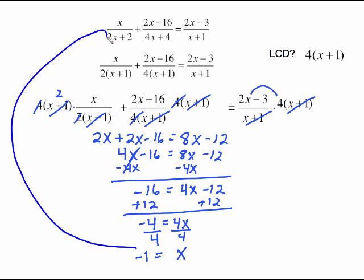But wait! Plug it in and check. Put a negative 1 in here. 2 times negative 1 is negative 2. Negative 2 plus 2 is 0 in the denominator. We're not allowed to have 0 in the denominator.